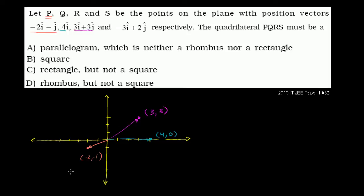And then finally, we have -3i. Let me do this in another color. Negative 3i, so 1, 2, 3, plus 2j, 1, 2. So right over there. So that is that last position vector. And it's specifying the point (-3, 2).